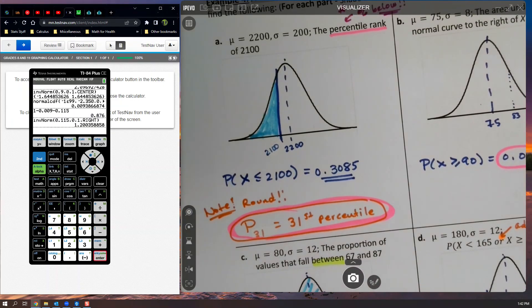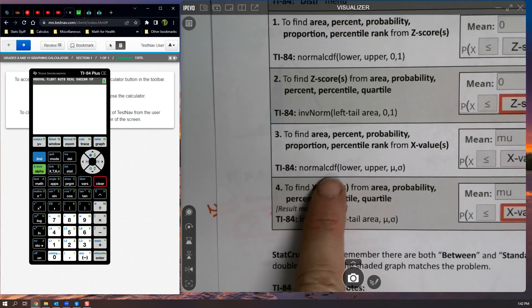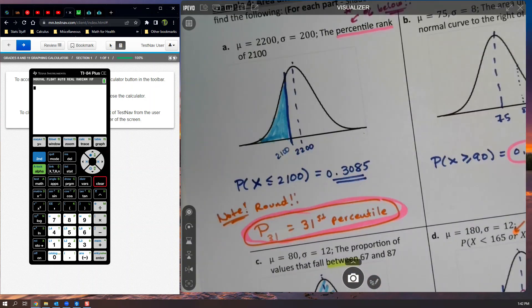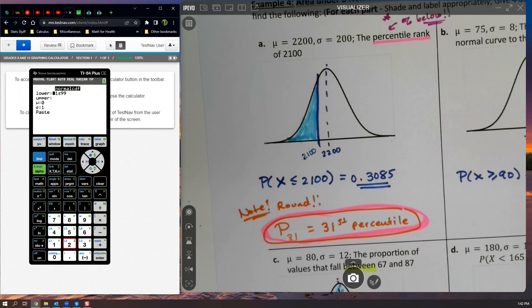TI-84, folks. For the first one, again, these are all normal CDF. You can see it on the table because you're doing number three here. And so it's normal CDF lower and upper. So the lower edge is negative 1E99 because it's forever this way, negative infinity. So we use negative 1E99 to stand for that. And that E, by the way, I'll just remind you all because that's a mistake people make. It's the double E that's on your comma button. So you have to hit second E to make that happen. And then it's going to stop at 2100. The mean is 2200. The standard deviation was 200. So I'm going to paste that in. And there we have it.